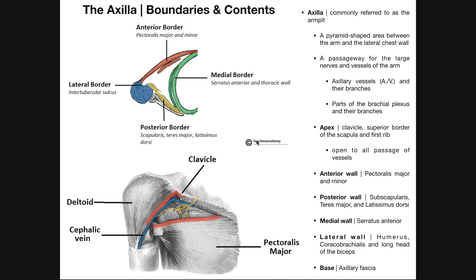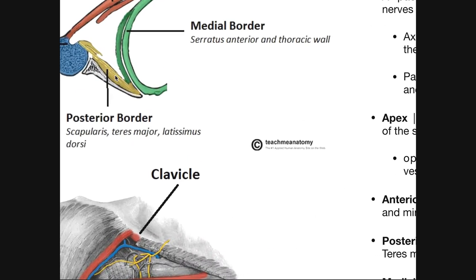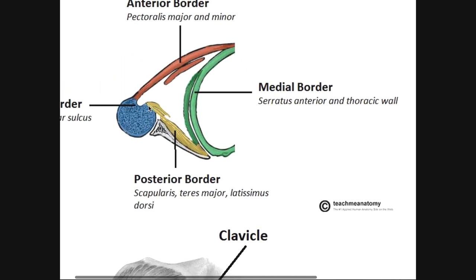The posterior border is composed of subscapularis, teres major, and latissimus dorsi. When looking at this scapula, the posterior part is not actually facing the axilla — those are going to be infraspinatus and teres minor. But the anterior rotator cuff muscle facing this axilla is subscapularis. Then we see a little bit of teres major and latissimus dorsi, because their insertions are on the medial lip of the intertubercular groove of the humerus — also called the intertubercular sulcus. The insertion of the long head of biceps brachii is in that groove itself, but on the medial lip we have the insertion of teres major and latissimus dorsi, helping make up part of the posterior border.